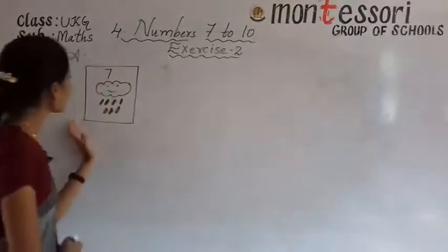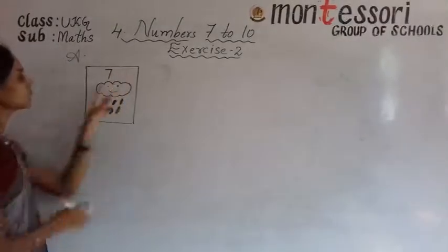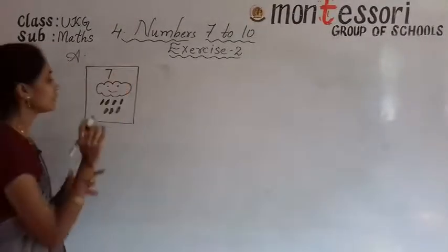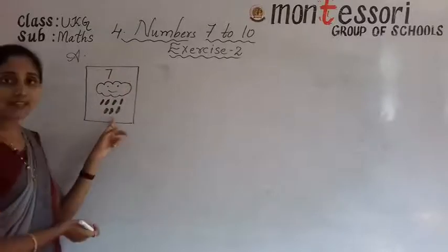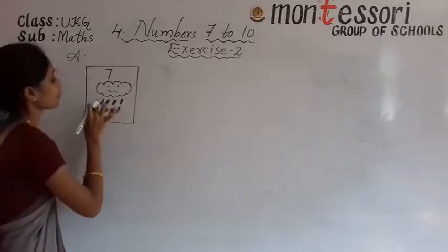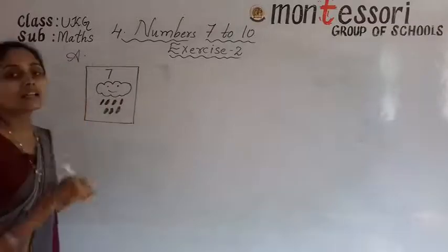So in the first box, what is the number given here? 7. So how many raindrops are there in that box? 7 raindrops. 1, 2, 3, 4, 5, 6, 7.